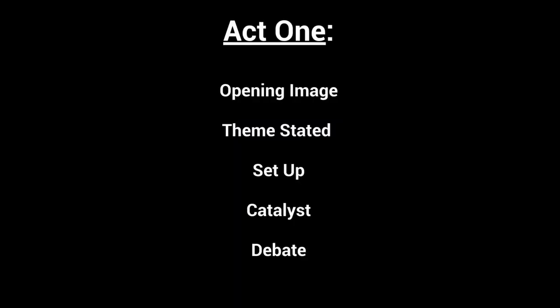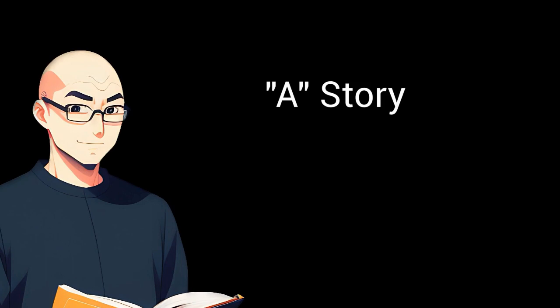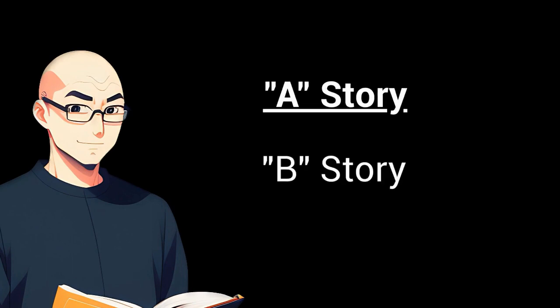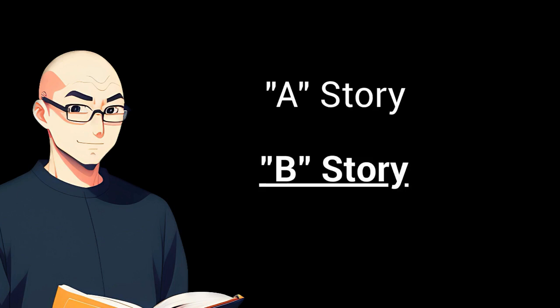The second story beat of Act 1 is Theme Stated. This is the perfect time to talk about what your story is about. Stories, speaking in the most basic way possible, have two plot threads running through them: your A story and your B story. Your A story is literally what is happening on the page — your character goes to places, meets people, and does things. Your B story is the lesson that your character needs to learn, and this happens underneath the surface.